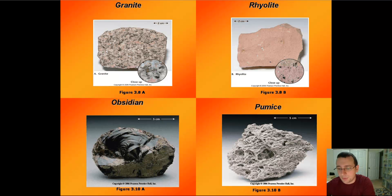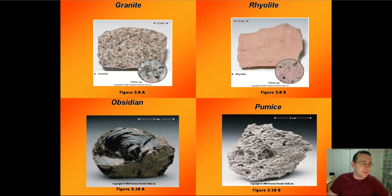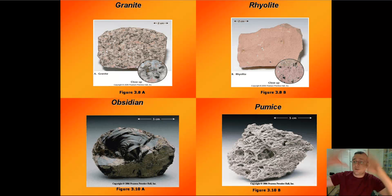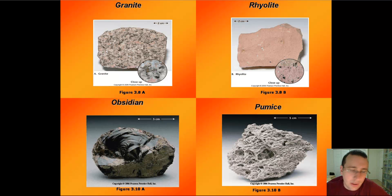Pumice rock forms during pyroclastic explosions when you also have fast cooling but with lots of gas inside, giving it that vesicular texture characteristic of pumice. Quick review: among felsic rocks, intrusive materials become granite (coarse-grained); extrusive materials become rhyolite if they cool moderately, or obsidian or pumice if they cool very fast. If it's from a lava flow it becomes obsidian — very glassy and dark. If it's from pyroclastic material full of gas that flew into the air and cooled midair, you get pumice rock. Pumice is so light it can actually float on water.